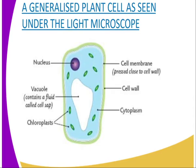For example, you can be able to identify the nucleus, the vacuole — whereby the vacuole, as you can see, contains a fluid known as the cell sap. We also have the chloroplast. We shall look at the different functions of the organelles in our later lesson. But in this case, let us just look at the general structure. We also have the cell membrane, whereby the cell membrane is pressed close to the cell wall. On a different note, if you observe the animal cell, it will lack the cell wall. We shall discuss that in our next lesson.